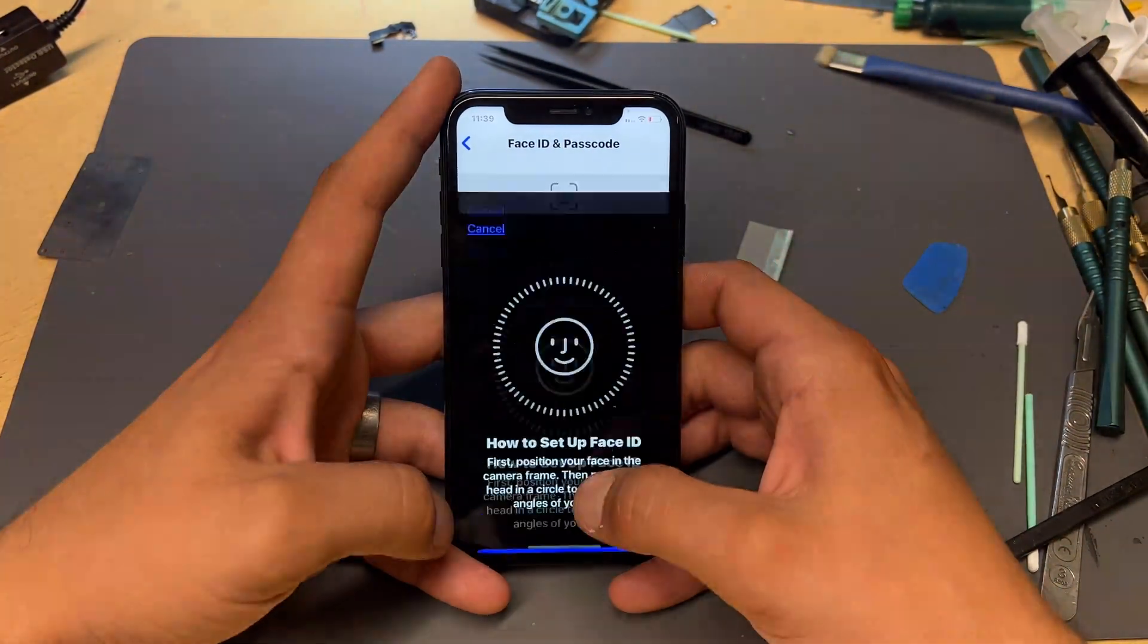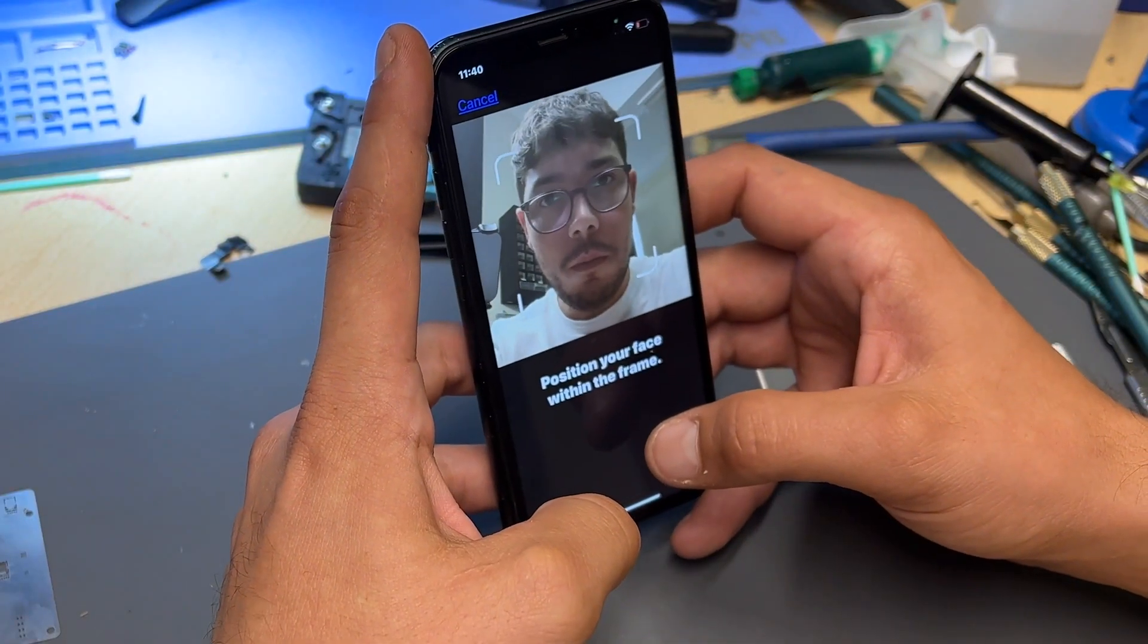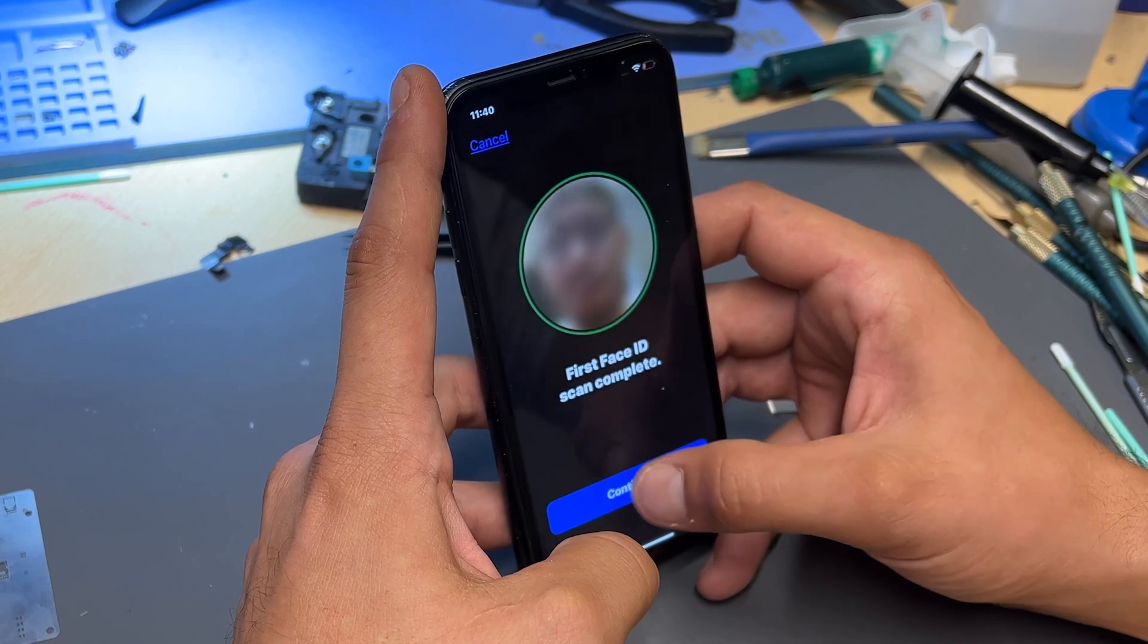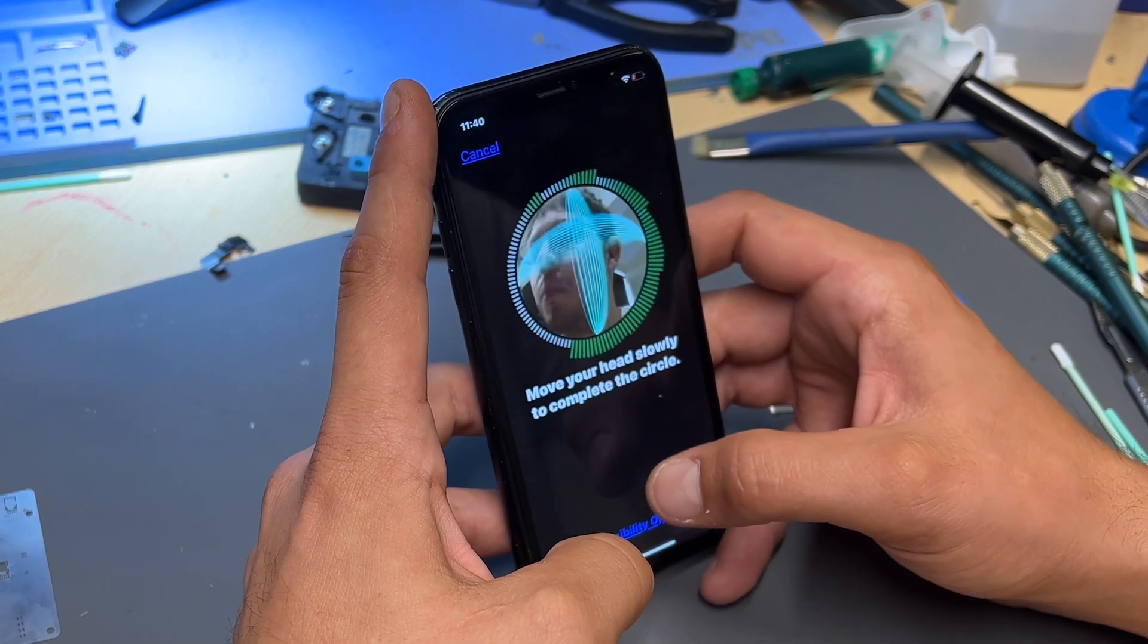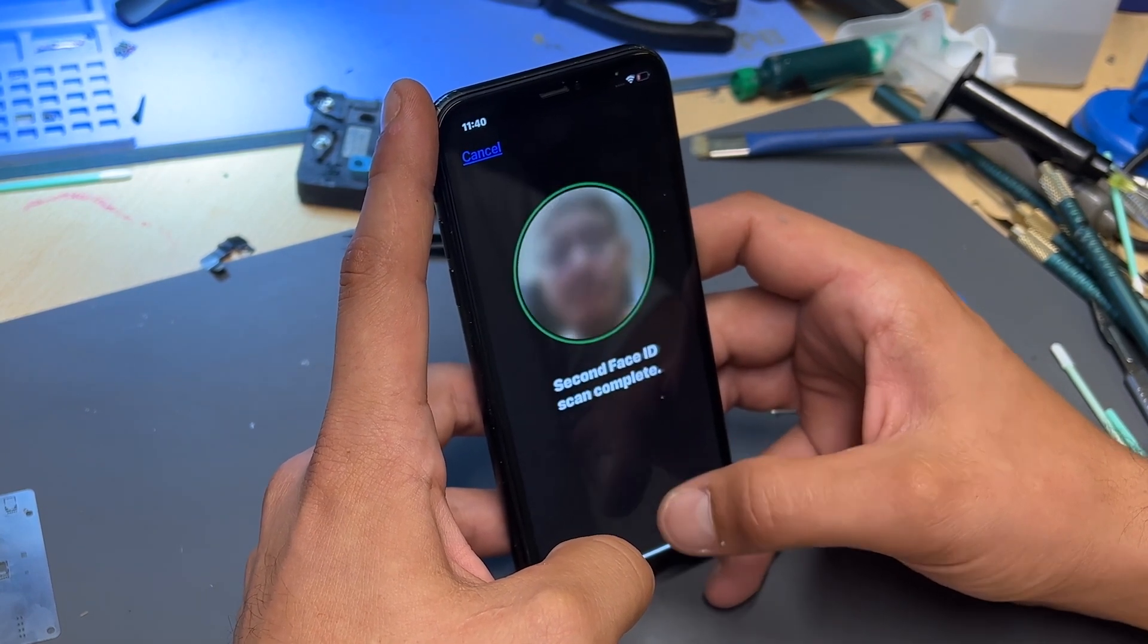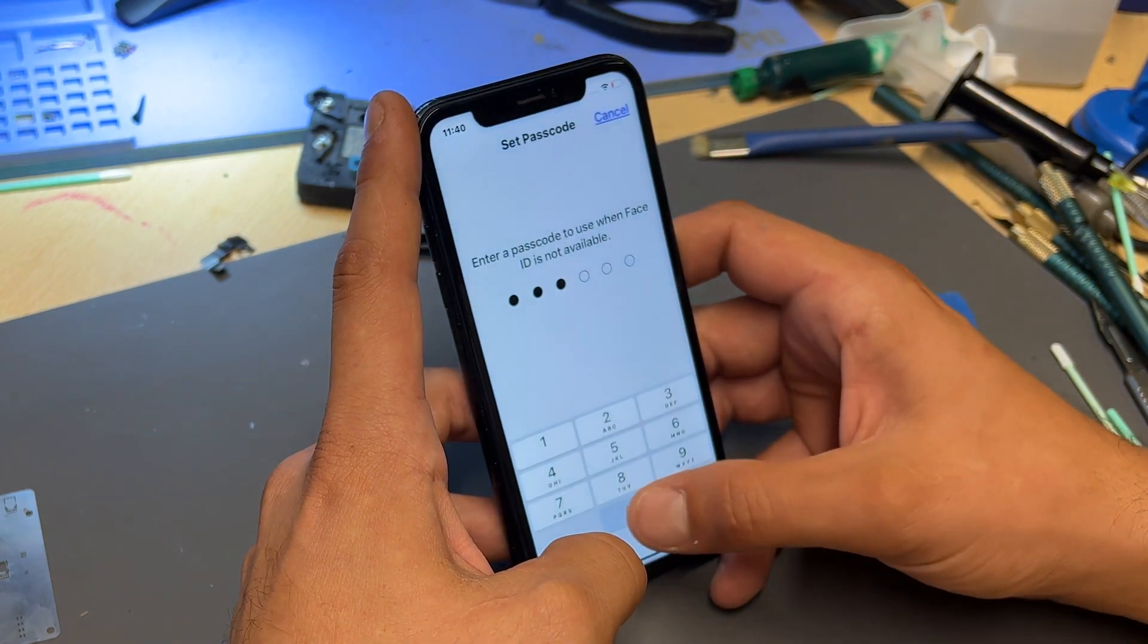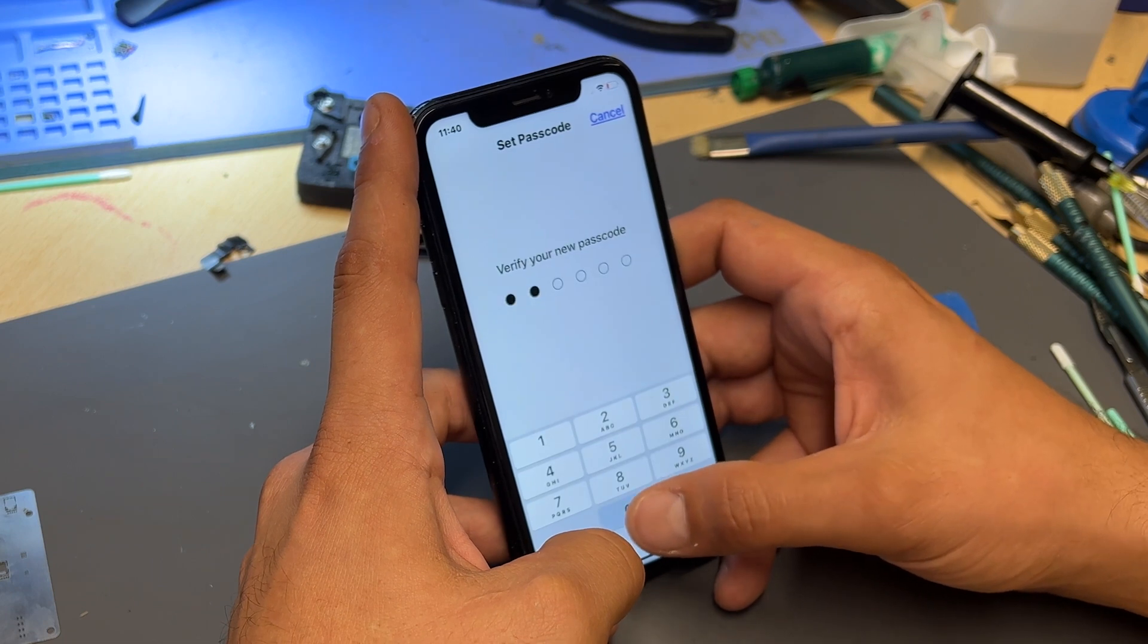Anyway, once the device boots, I head straight to settings and straight away, I can see that the TrueDepth error message is gone and when I try to set up Face ID, it works straight away. It's important to also make sure that you don't just recognize the face, go through the full setup process here and then test that it unlocks the phone, which we can see clearly that this one does.